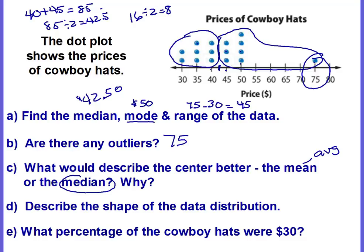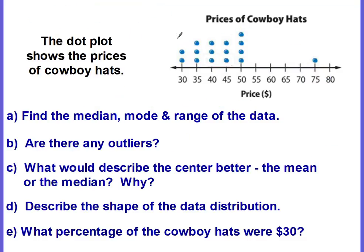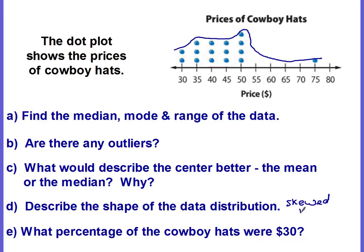Let's describe the shape. I'm going to draw my outline — it's not symmetric. There's a tail, and the tail goes to the right. So the shape would be skewed to the right.